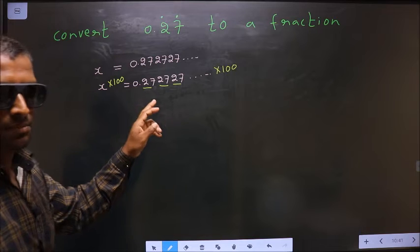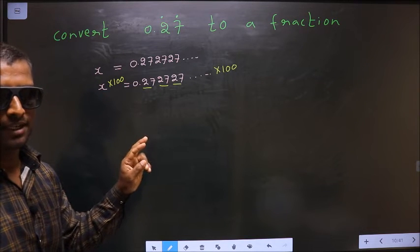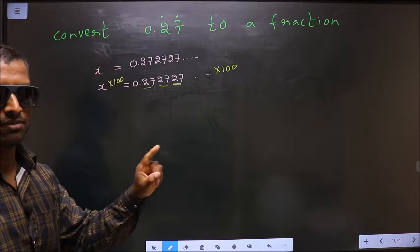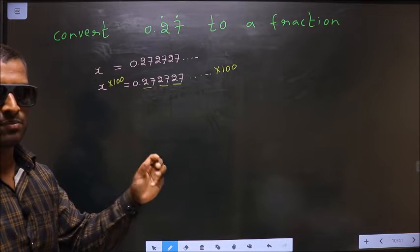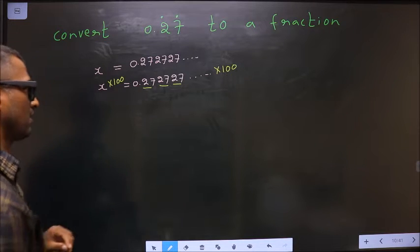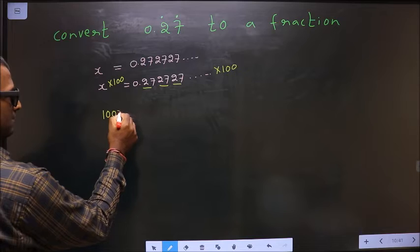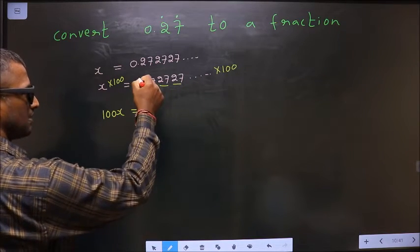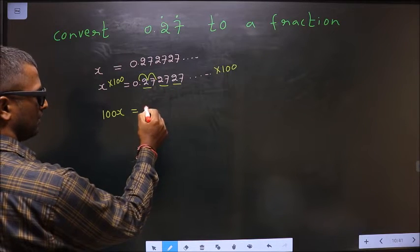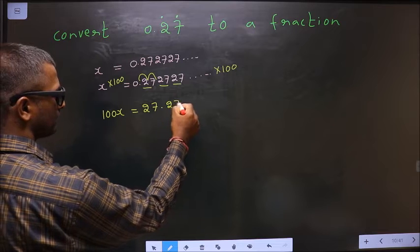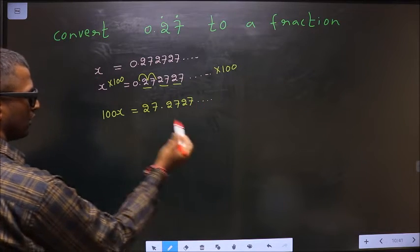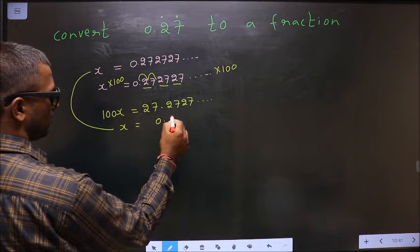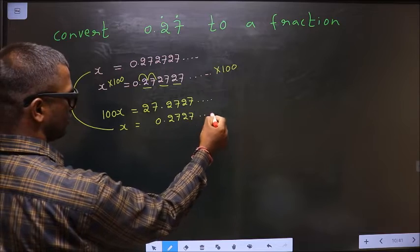Whenever two numbers are being repeated, multiply by 100. Had it been three numbers, multiply by 1000. Had it been only one number, multiply by 10. So 100x equals 100 times x, and when multiplying by 100 the decimal moves two places to the right, making it 27.2727 and so on. We write below it 0.2727 and so on.